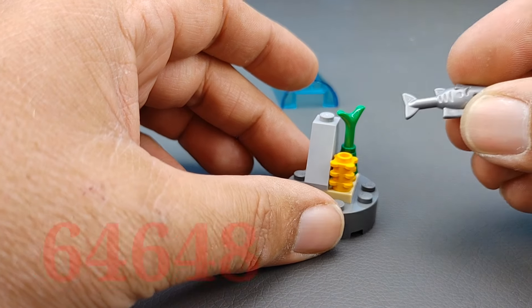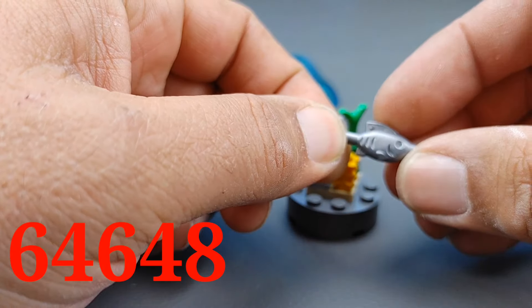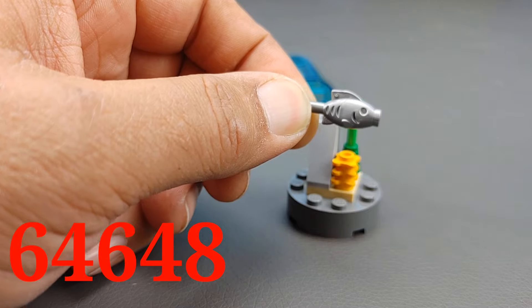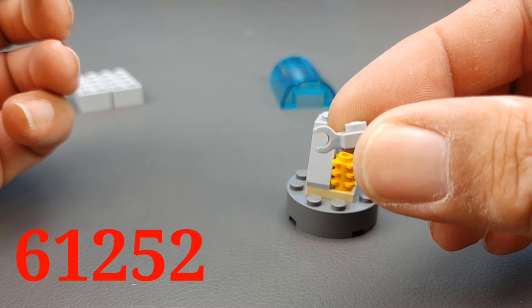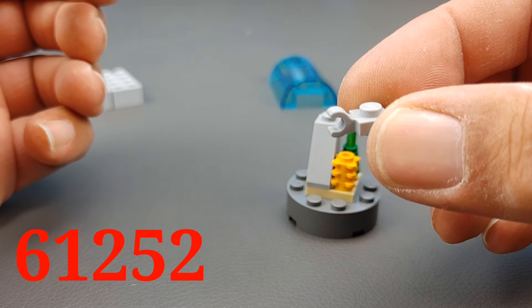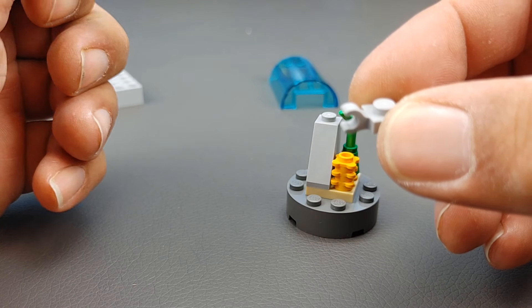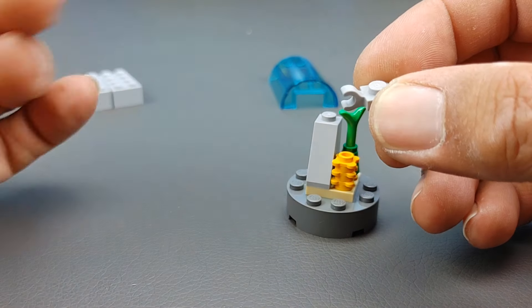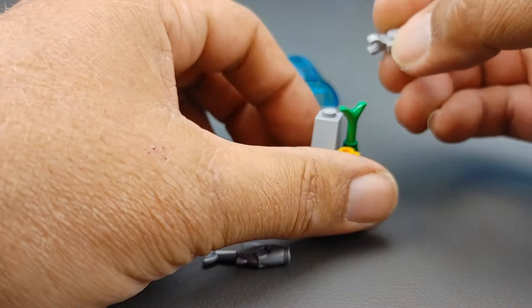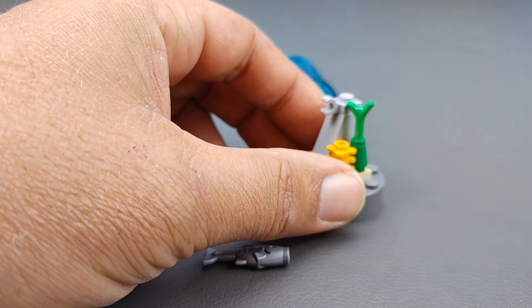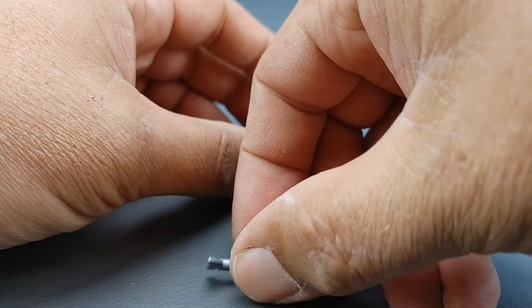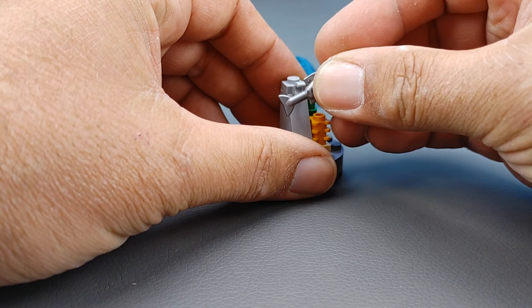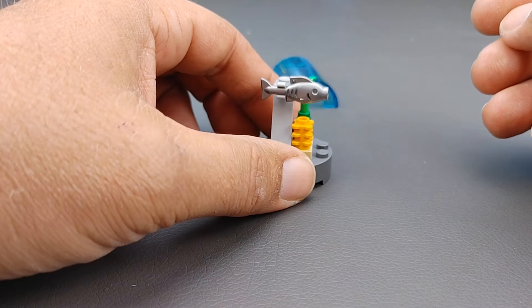And here's how we make the fish look like it's floating. We use this guy. This is a 1x1 modified clip or modified plate, whatever it is, but the part number will be up here. But anyway, you take that guy, we'll stick him on top of there like that. And then we take our fish and we simply pop that on the tail.